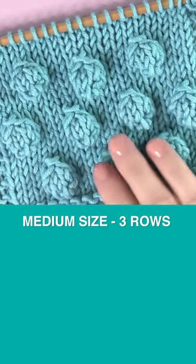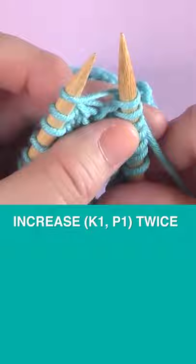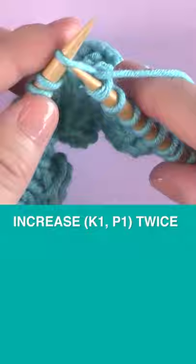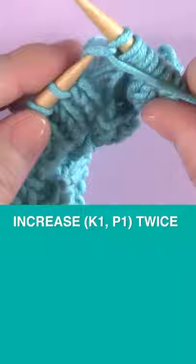Let's knit a medium-sized bobble stitch. We begin with our increases. We are knitting one and purling one two times. So that takes one stitch and we're increasing it to a total of four stitches for our bobble.